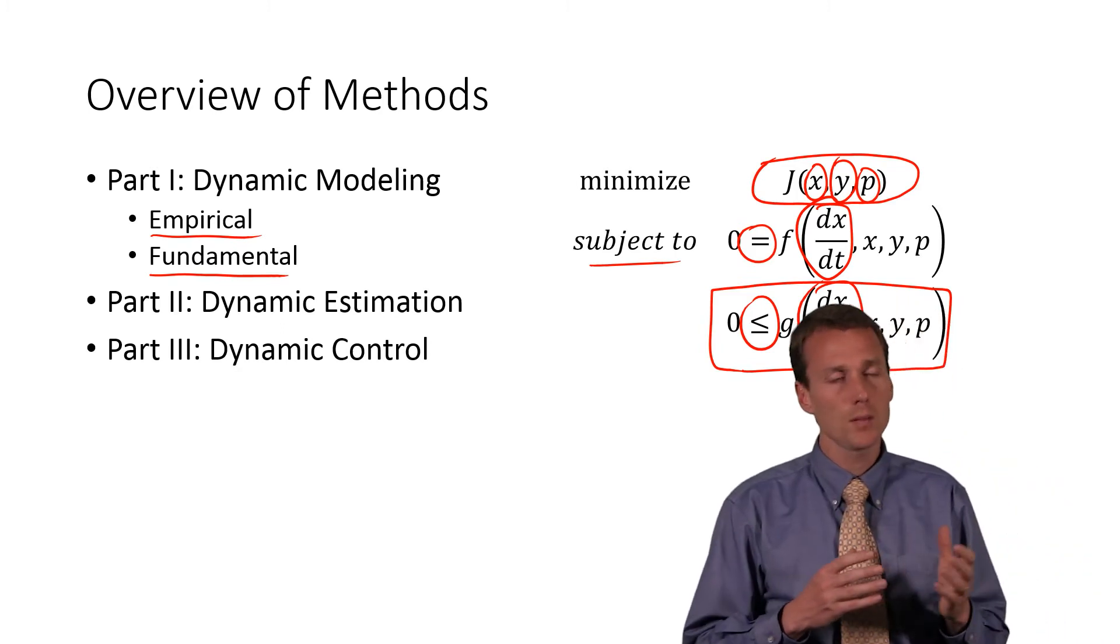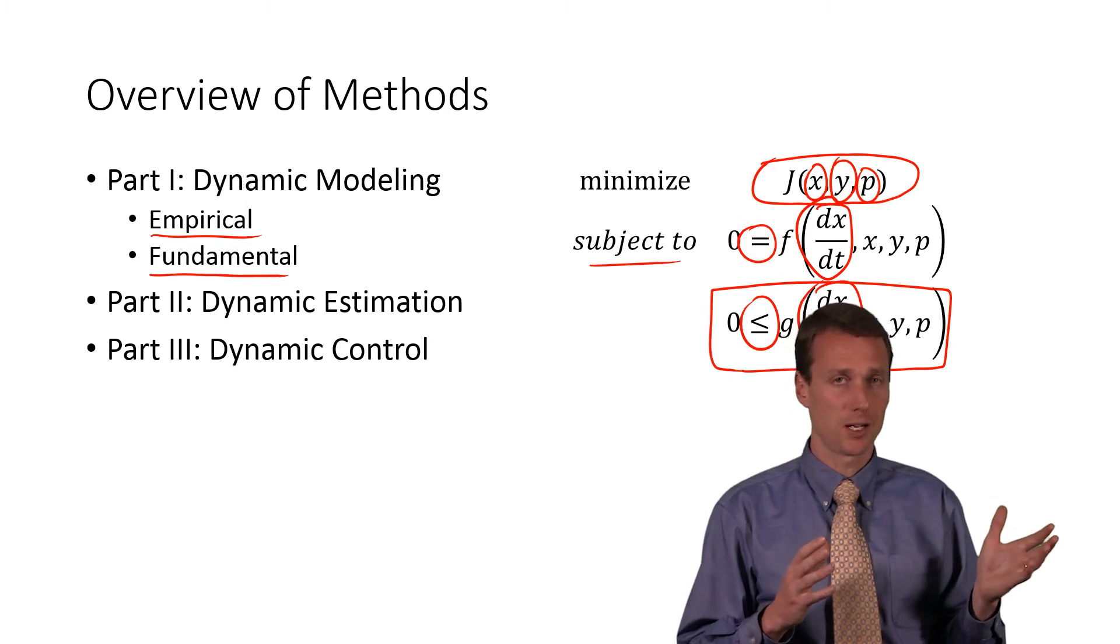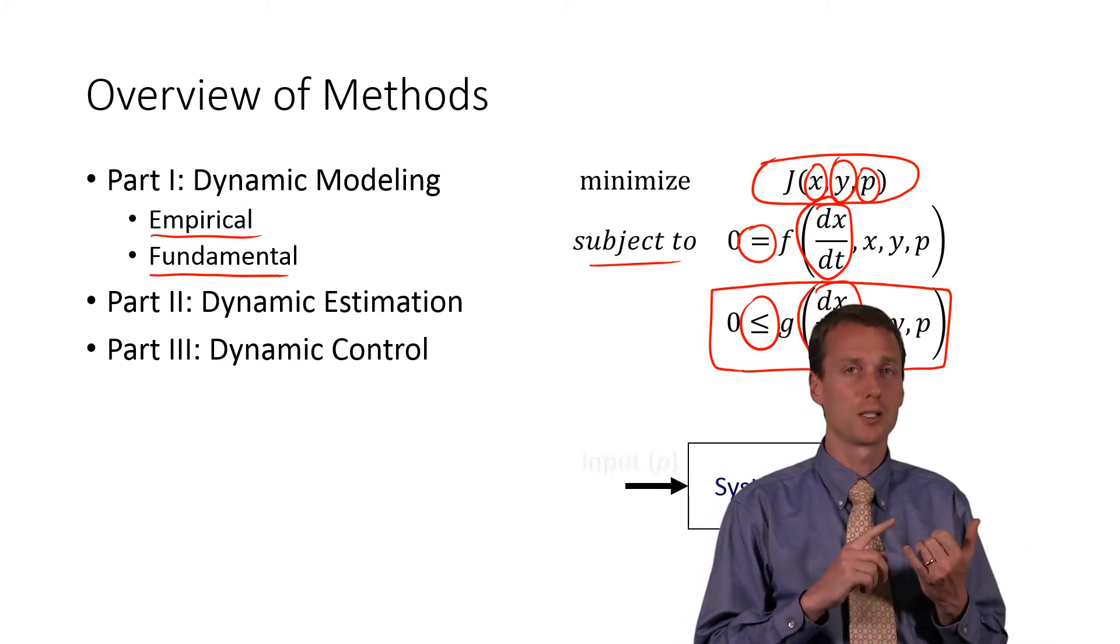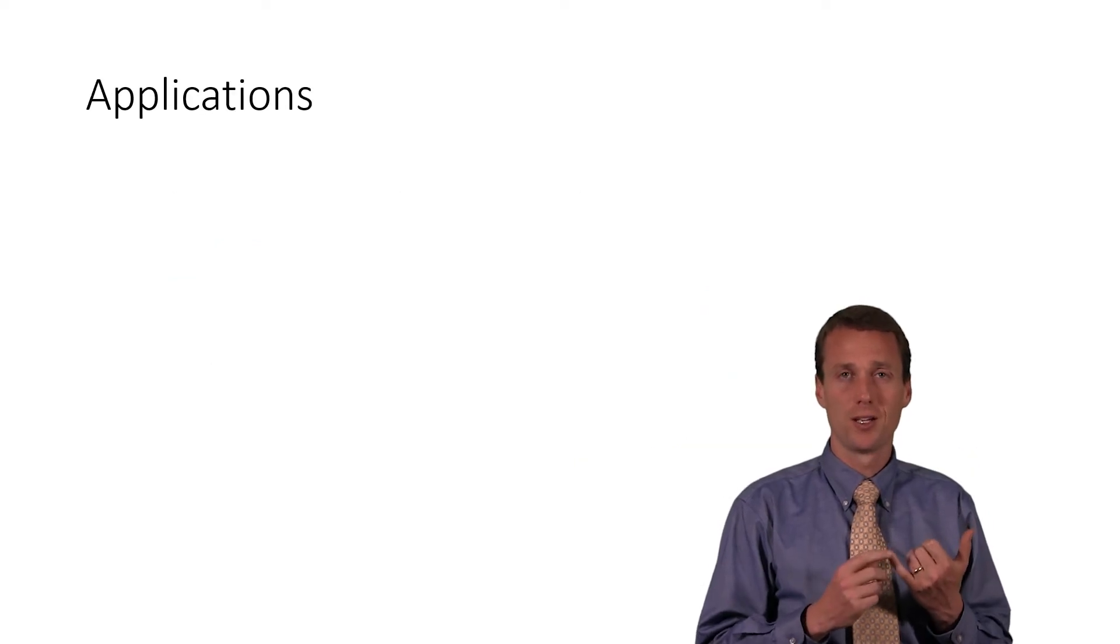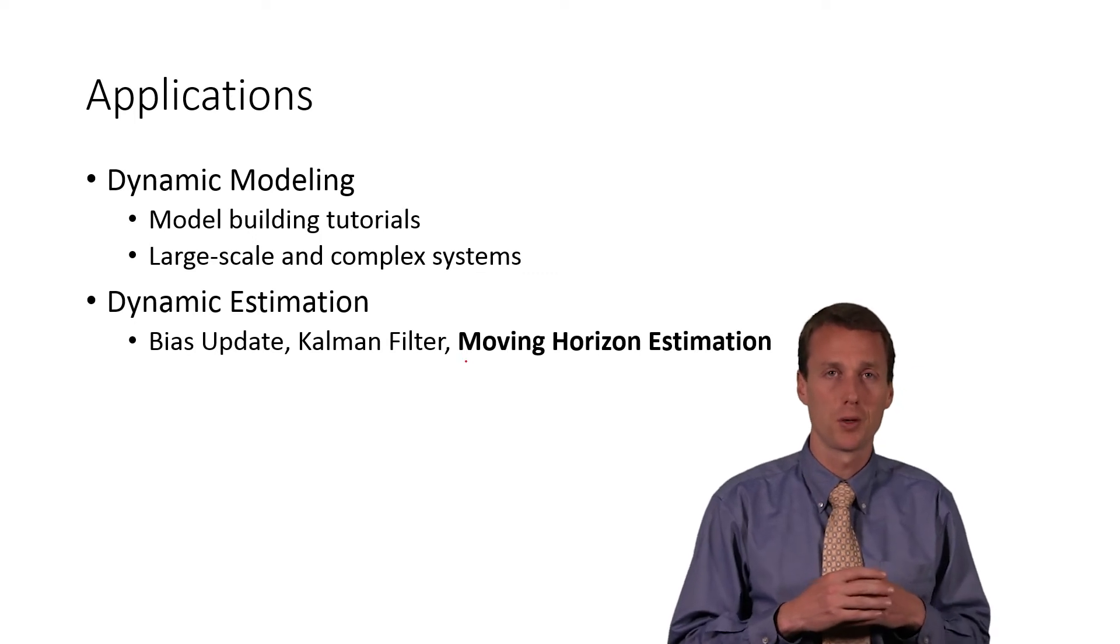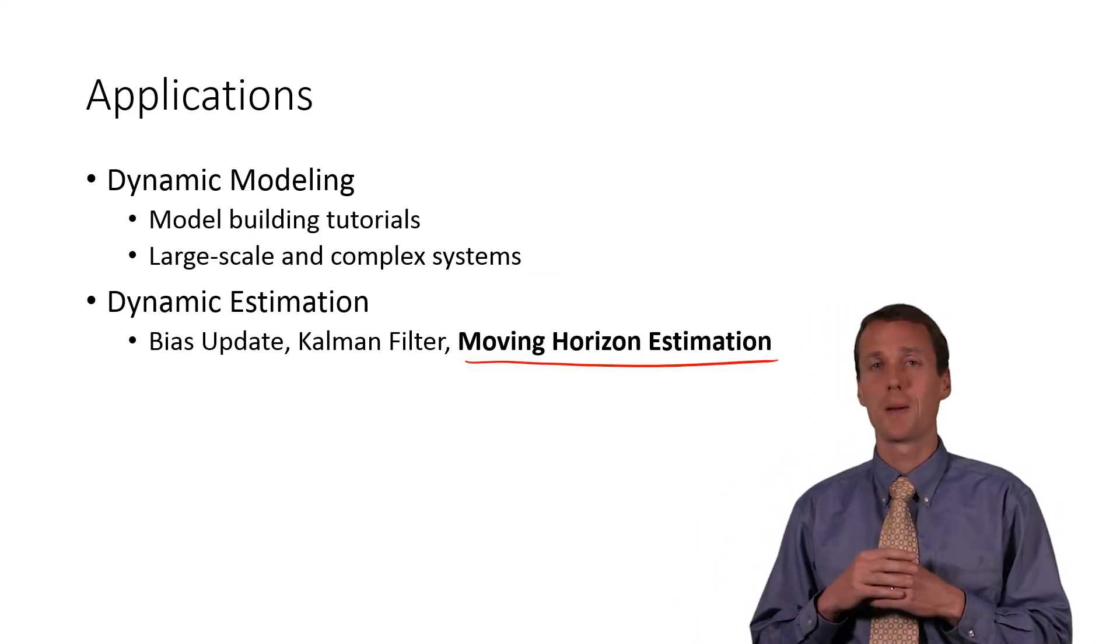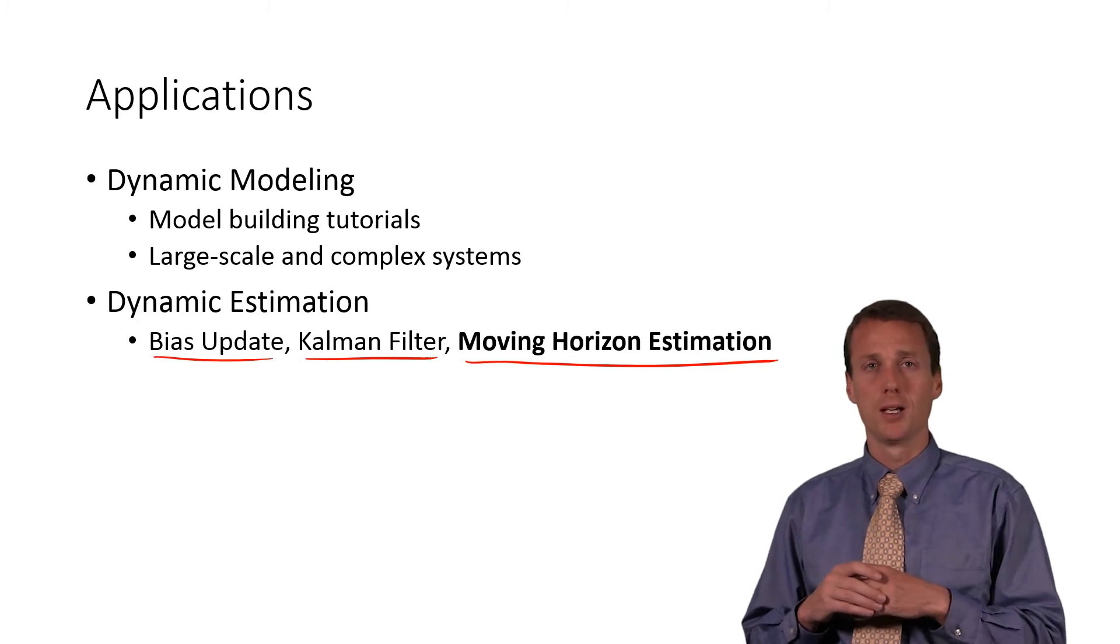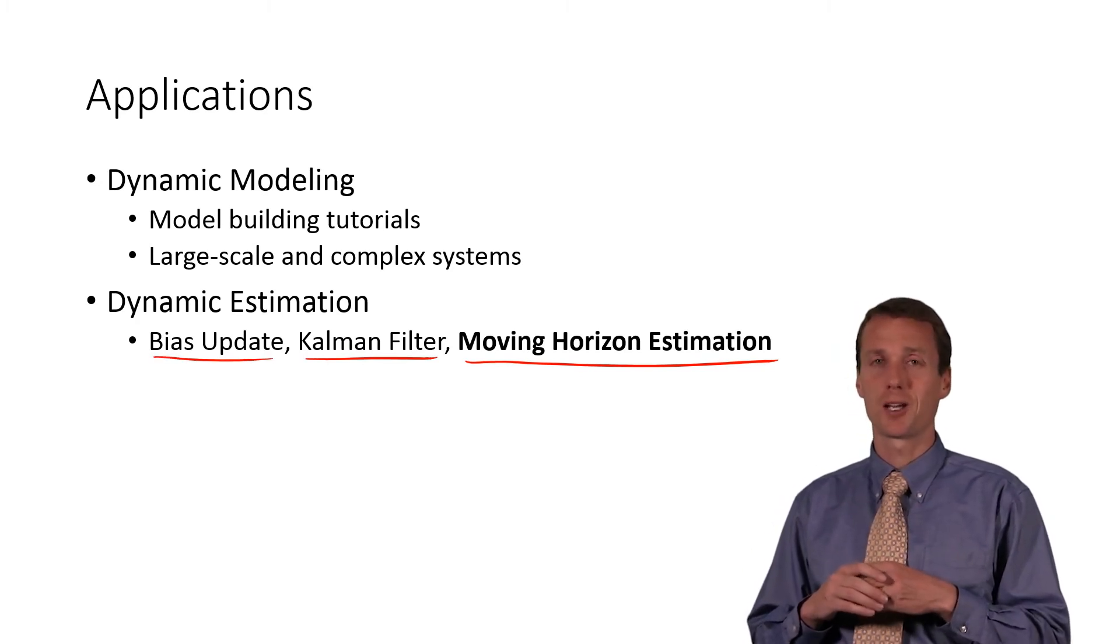Let's discuss a couple of other things that we're going to be talking about in this class. As we go through this, some of the other things that you might have heard of, for example, estimation, we're going to be using a moving horizon estimation approach. We're also going to compare that with Kalman filters and simple bias updating.